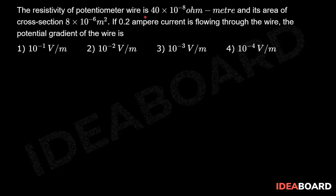The resistivity of a potentiometer wire is 40 into 10 power minus 8 ohm meter and its area of cross-section 8 into 10 power minus 6 meters square. If 0.2 ampere current is flowing through the wire, the potential gradient of the wire is.